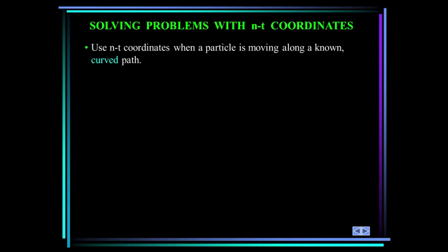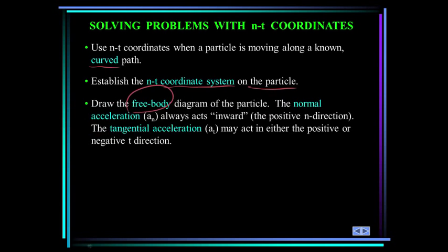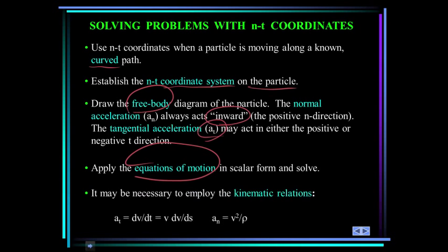To solve problems with n-t coordinates — very similar to rectilinear x-y coordinates — use n and t coordinates when the particle is moving along a known curved path. Establish the coordinate system on the particle and draw the free body diagram. The normal acceleration is always inward towards the radius of curvature. Tangential acceleration may act positively or negatively in the t-direction depending on whether you're speeding up or slowing down. Apply Newton's second law, and use kinematic relationships: tangential acceleration equals v dv/ds, and normal acceleration equals v² over rho.